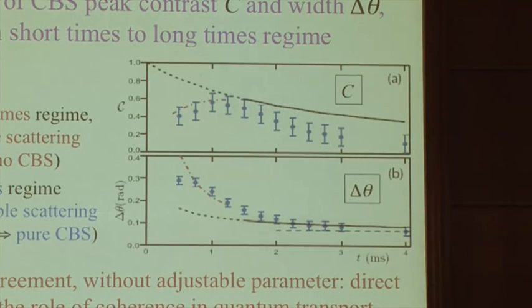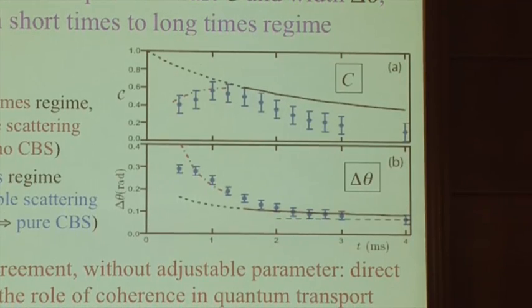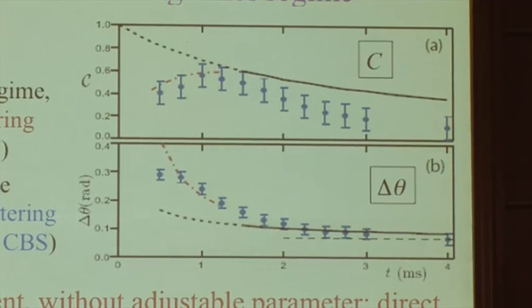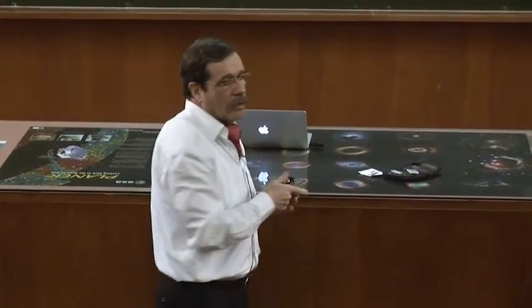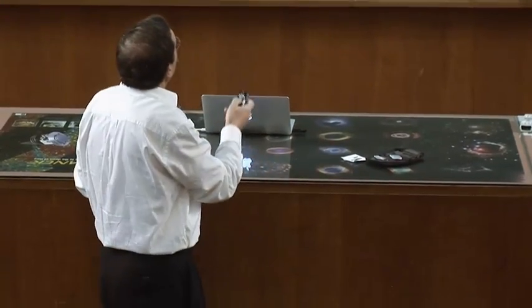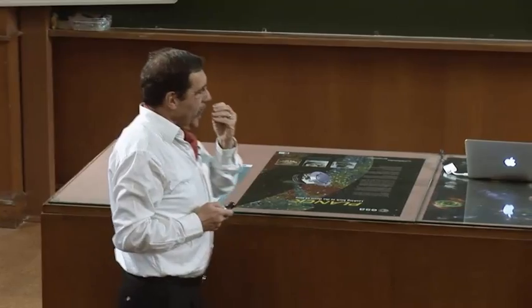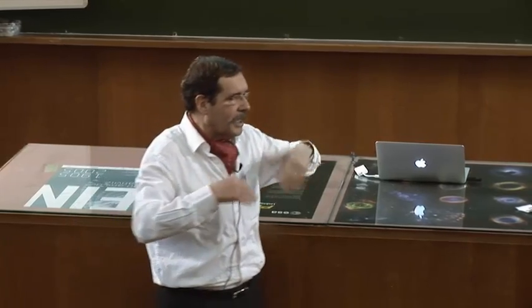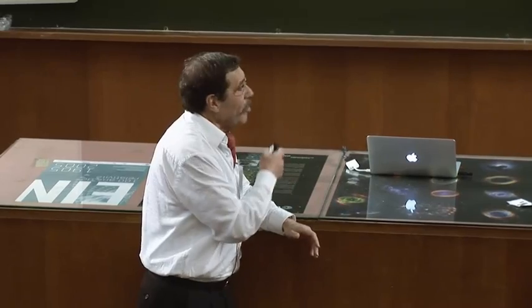Quant au contraste, au début c'est conforme à la courbe rouge. Mais ensuite, ce n'est pas si bien que prévu, car c'est un faux problème à deux dimensions : le désordre ce sont des barres, mais en réalité ce sont des ballons de rugby très allongés. De temps en temps, ça part en biais, et après suffisamment de diffusions, ça part vraiment en biais. On comprend ce qui se passe et on sait ce qu'il faudrait faire pour améliorer l'expérience. Pourquoi est-ce intéressant ? Parce que la localisation d'Anderson peut se comprendre comme la resommation d'un grand nombre de diagrammes — et la rétrodiffusion cohérente, c'est le phénomène à l'ordre 1.